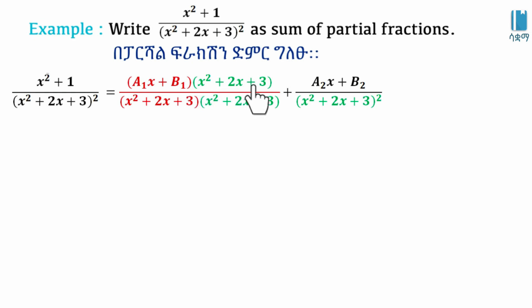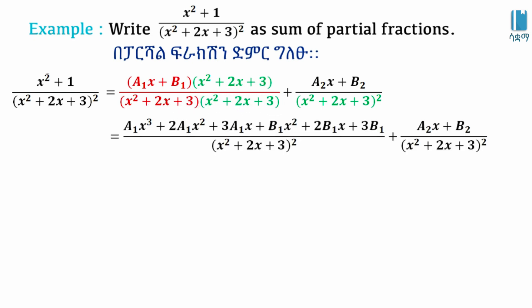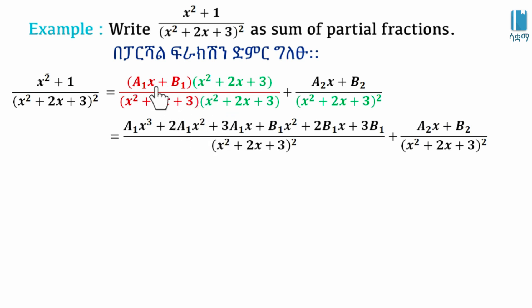With A1x plus B1 multiplied by (x² + 2x + 3), the result expands as: A1 times (x² + 2x + 3) plus B1 times (x² + 2x + 3). The denominator factors as x squared plus 2x plus 3. Expanding gives A1·x³ plus 2A1·x² plus 3A1·x plus B1·x² plus 2B1·x plus 3B1.